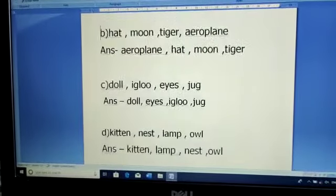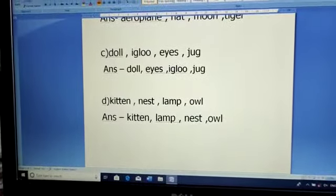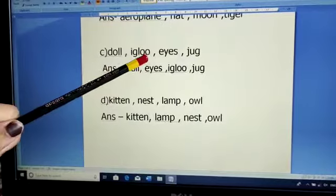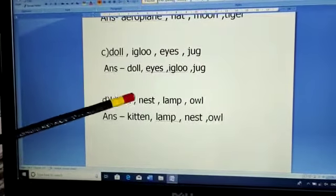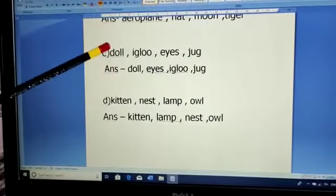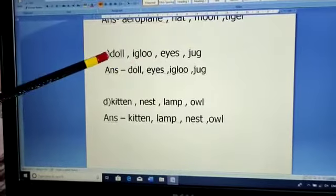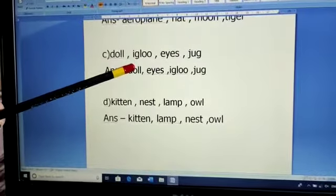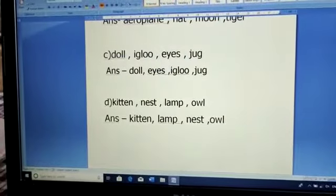Now come to the C part. The words given to you in C part are doll, igloo, eyes and jug. So in ABC order, D comes first. We will see the first letter of each word: D for doll, I for igloo, E for eyes and J for jug. Now when I am going through the ABC order, A, B, C, D.